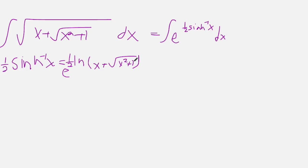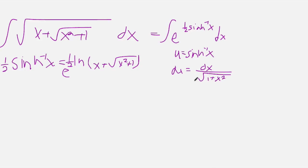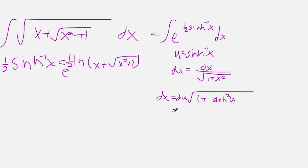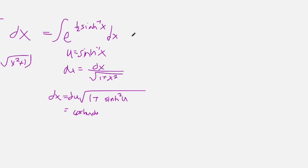So now it's only natural to use u-substitution, which is u equals the inverse hyperbolic sine of x. And our du is going to be equal to dx divided by the square root of 1 plus x squared. And so we have that dx equals du times the square root of 1 plus — notice that x equals the hyperbolic sine of u, and by the Pythagorean identity, this is equal to the hyperbolic cosine of u du. And that makes things really nice. So we have the integral of e to the one half u times the hyperbolic cosine of u du.